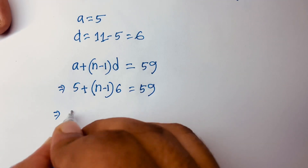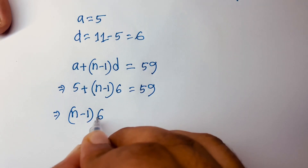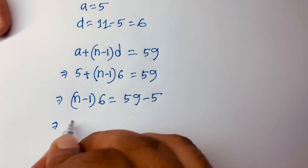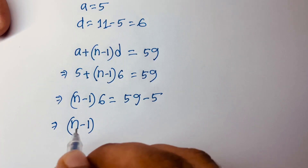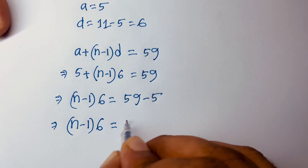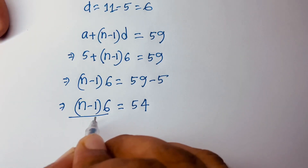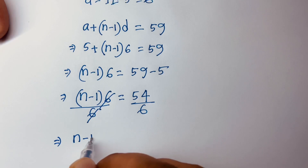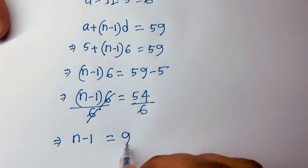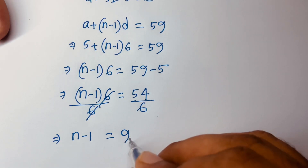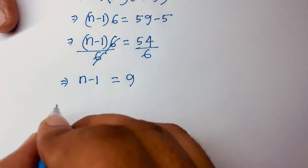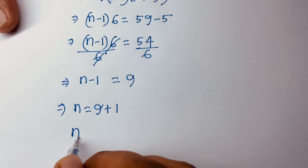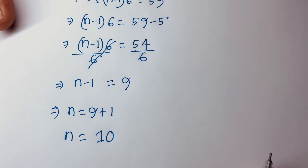So (n minus 1) times 6 is equal to 59 minus 5, which gives (n minus 1) times 6 equals 54. Dividing both sides by 6, the 6 cancels, so n minus 1 equals 9, which means n is equal to 9 plus 1, so n equals 10.